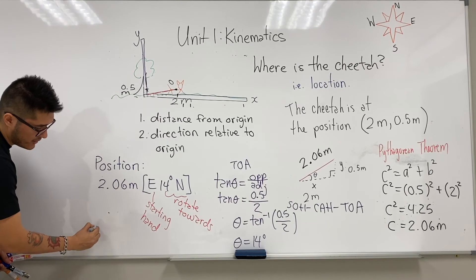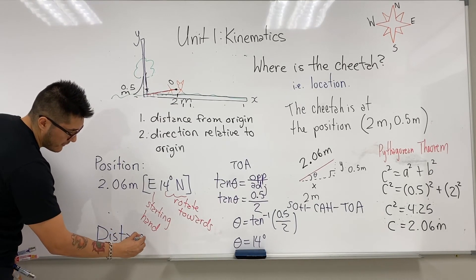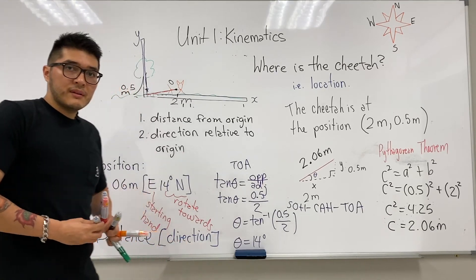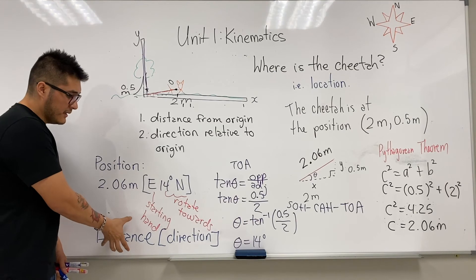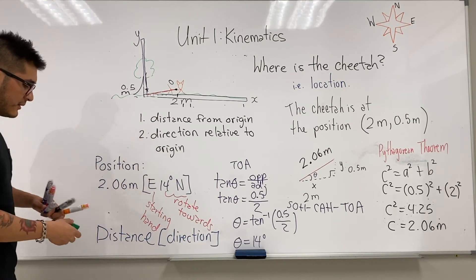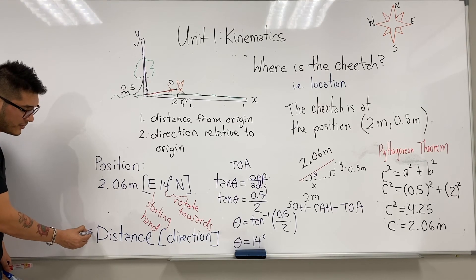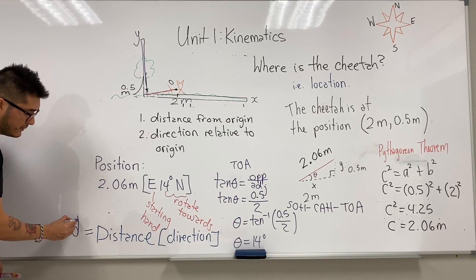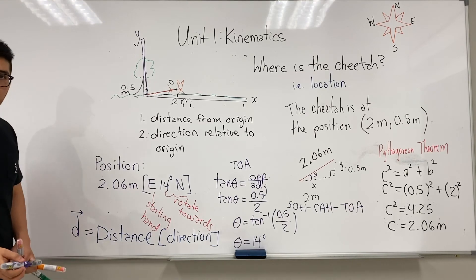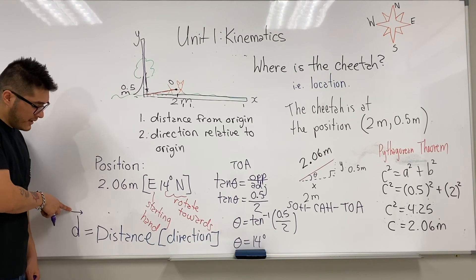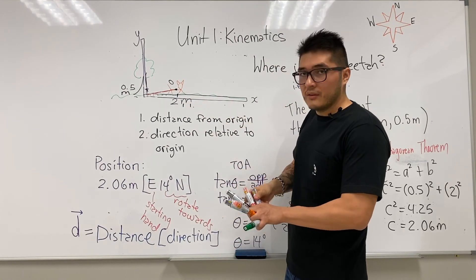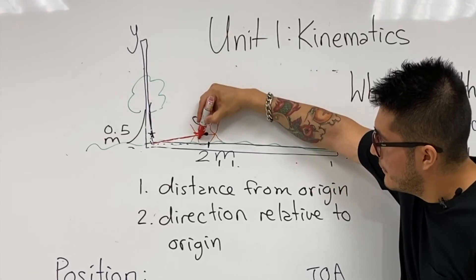For position you need to describe the distance with the direction. This comes up again and again in physics — describing the length or amount of something and the direction it points. This is called a vector quantity. The first letter we use to represent our vector is d. This is a new type of quantity, so you add a little arrow on top because it's a regular distance quantity but since it has a direction, the arrowhead reminds us of that.